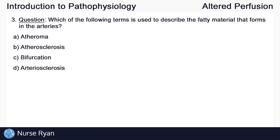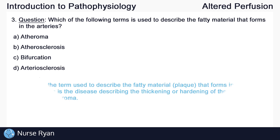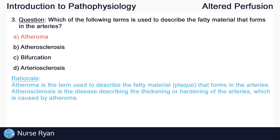Question number three: which of the following terms is used to describe the fatty material that forms in the arteries? The answer is A — atheroma. Atheroma is the term used to describe the fatty material or plaque that forms in the arteries. Atherosclerosis is the disease describing the thickening or hardening of the arteries, which is caused by atheroma.